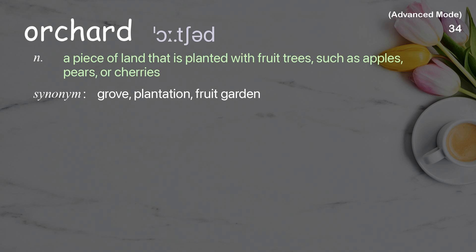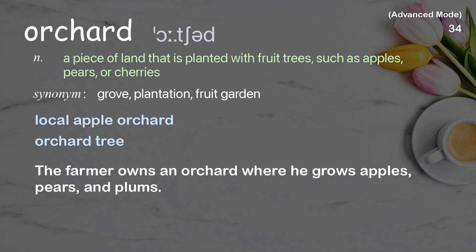Orchard: a piece of land that is planted with fruit trees such as apples, pears, or cherries. Examples: local apple orchard, orchard tree. The farmer owns an orchard where he grows apples, pears, and plums.